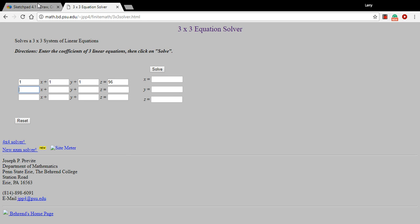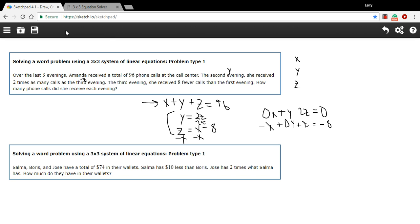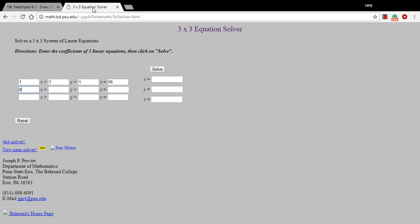And the second one, let's see, is 0, 1, negative 2, 0. 0, 1, negative 2, 0.